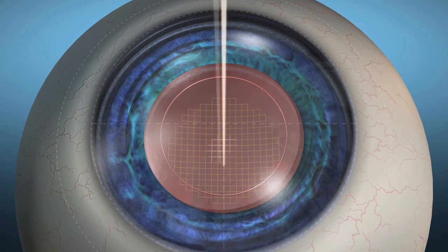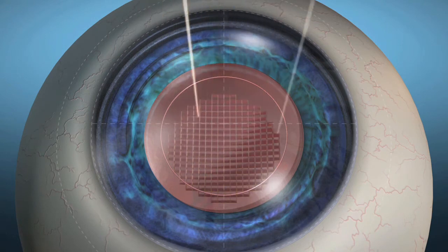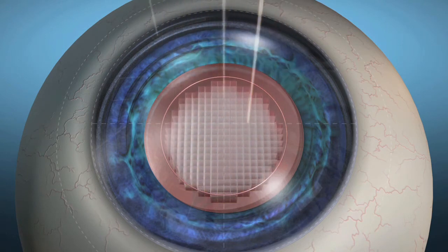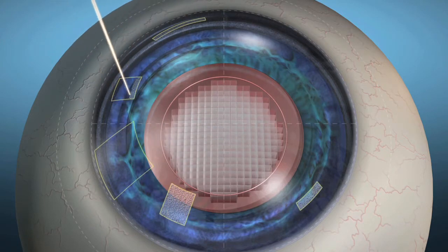By adjusting the depth, size, and location of each pulse as it fires, the LensX laser can create a wide range of cuts on multiple types of tissue.